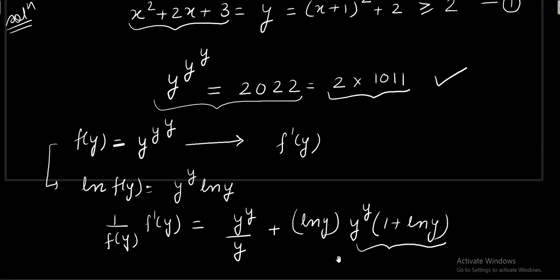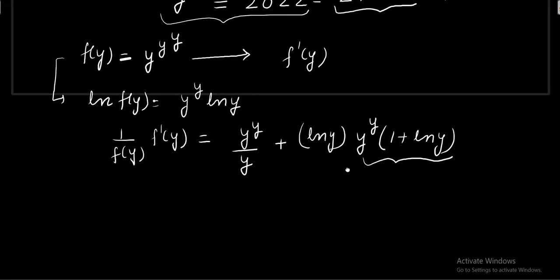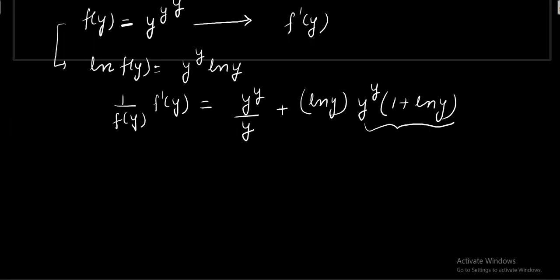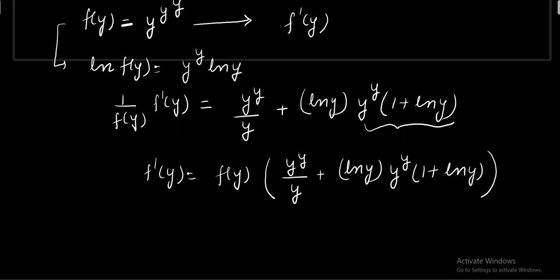So as I told you I'm interested more in finding the sign of f dash of y. So I just cross multiplied f of y, rewriting y to the y upon y plus ln y multiplied by y to the y multiplied by 1 plus ln y.